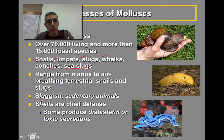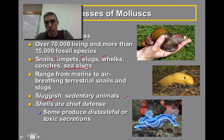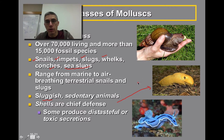Most of them tend to be somewhat sluggish, so they don't tend to move around too much. There are even a few species that are considered sedentary, which means they stay pretty stationary. The shells tend to be the chief defense for these animals if they do have a shell. Over here on the right is an example of a banana slug that you would find around these parts.